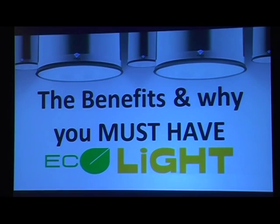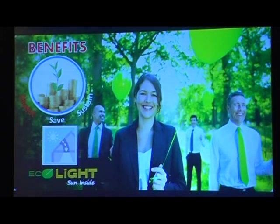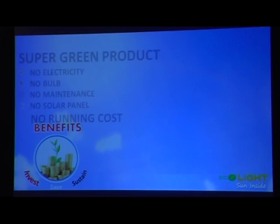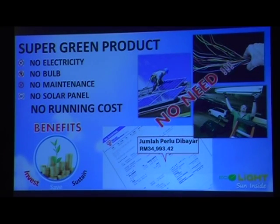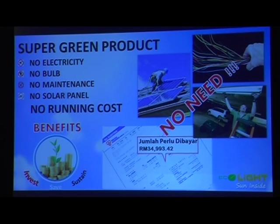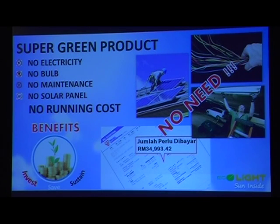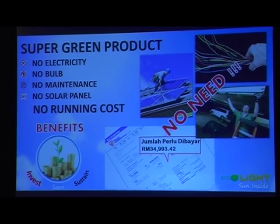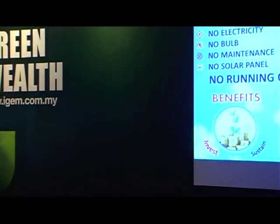What are the benefits and why must you have Ecolight? This is a super green product. It needs no electricity to power it. No bulb, no maintenance, no solar panel, and no running costs. That's why when we presented it to KETA — Kementerian Tenaga Hijau — they called it a super green product, because there is no bulb, no electricity, no wire, and no maintenance. There is also no solar panel to power the system.